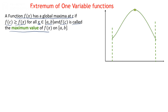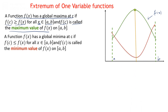Suppose we have a function represented by this green curve, that is f(x), and we take an interval a and b. At point c, the corresponding function value on the green curve is f(c), and we observe that at that point c the function has the maximum value.